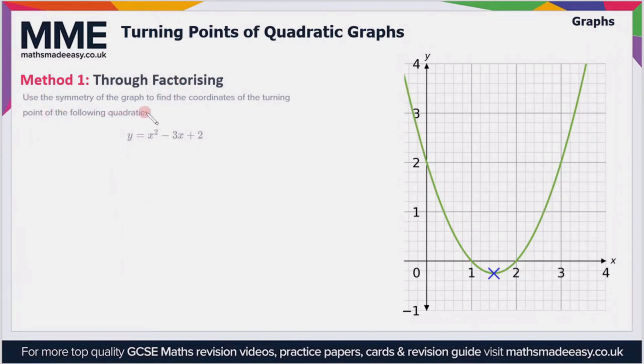Use the symmetry of the graph to find the coordinates of the turning point of the following quadratic. The graph we have is y equals x squared minus 3x plus 2, so that's this graph here on the right.